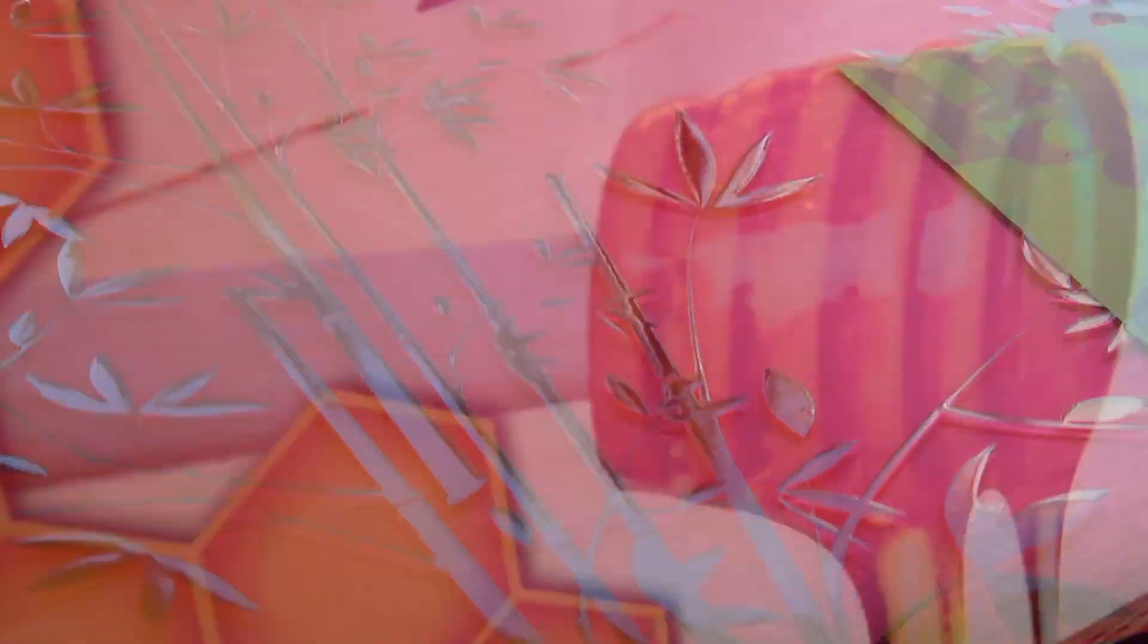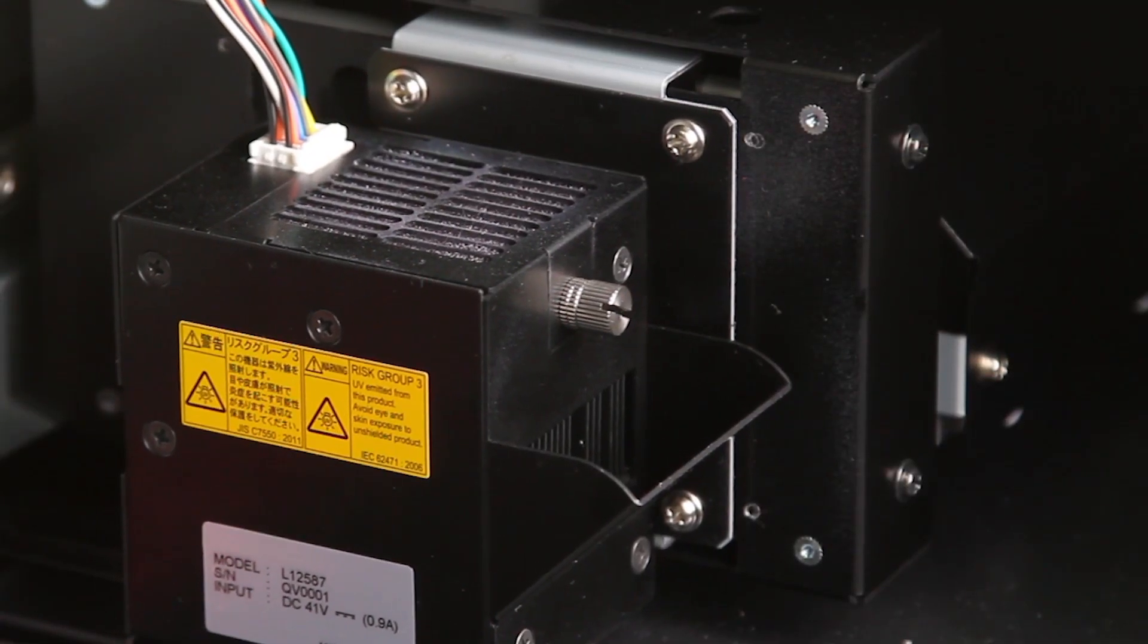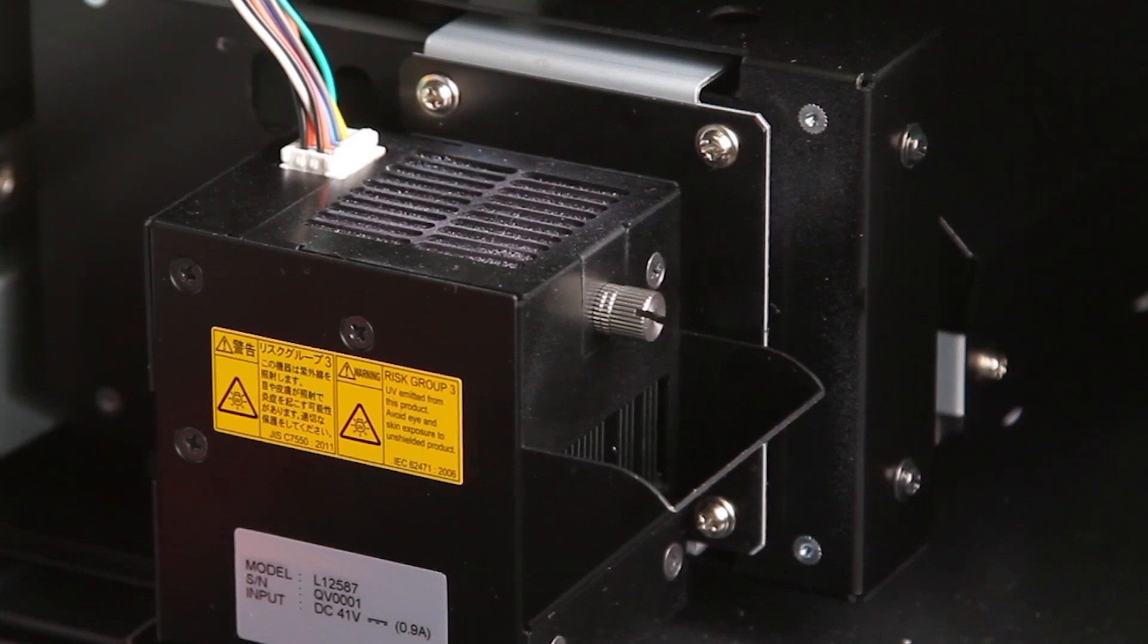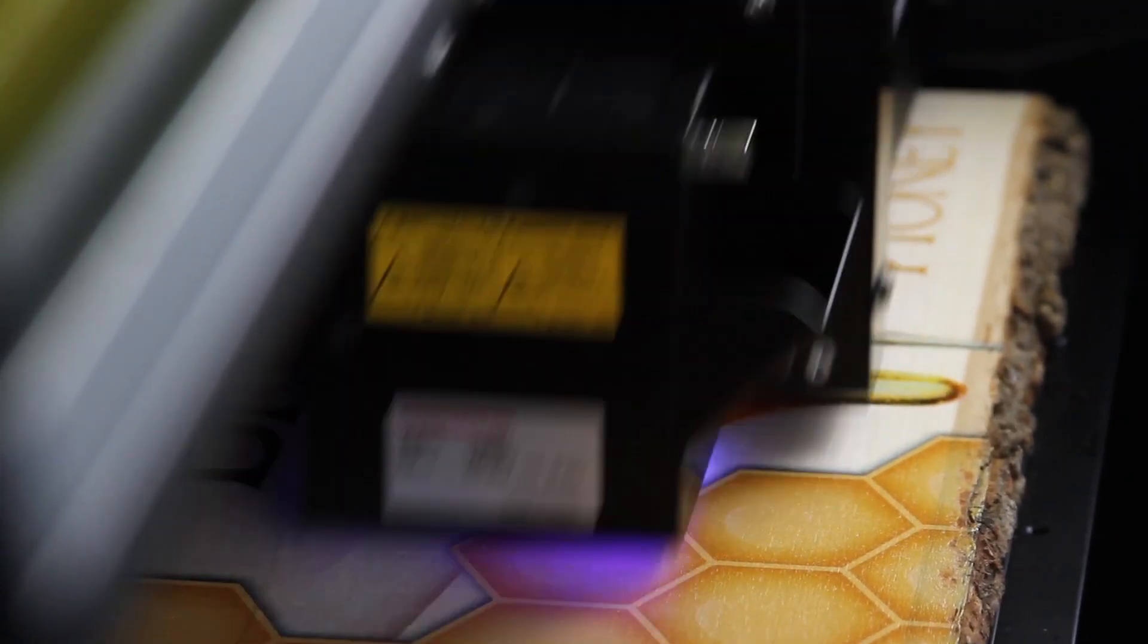Versa UV clearing effects have always been stunning. The LEF 20 features a new, moveable UV lamp design that doubles the speed of CMYK and clearing printing.